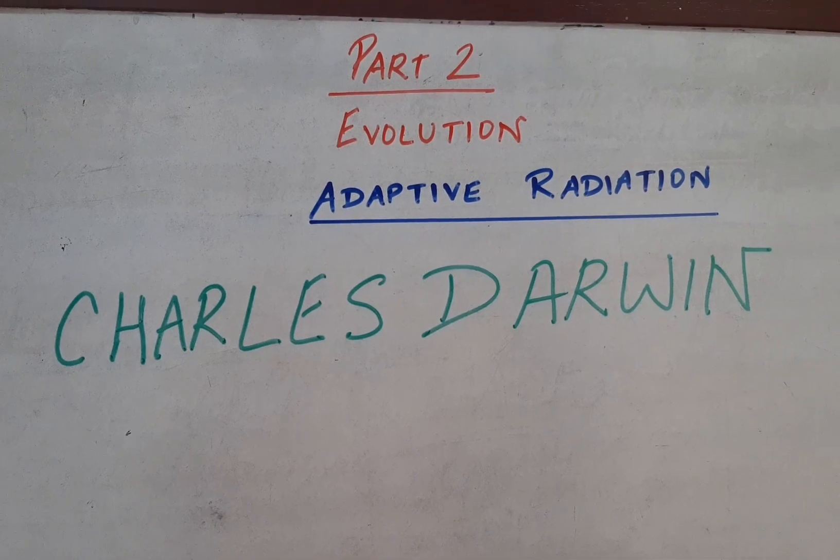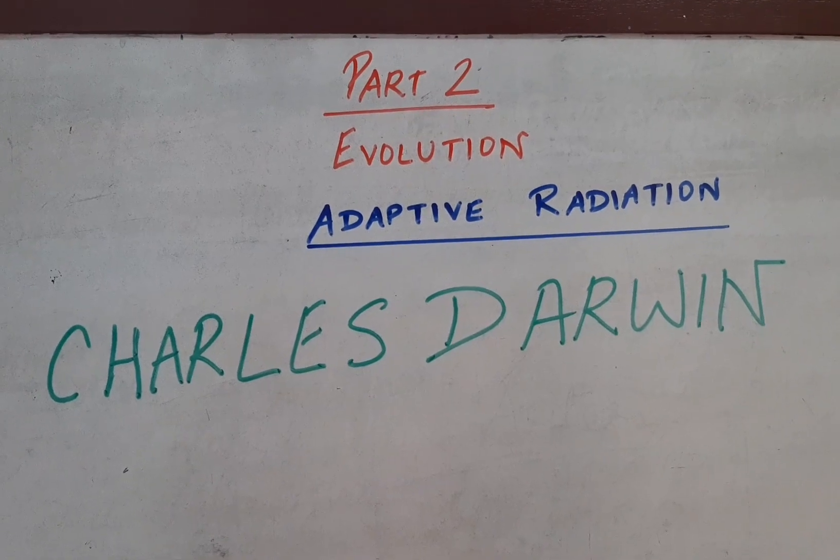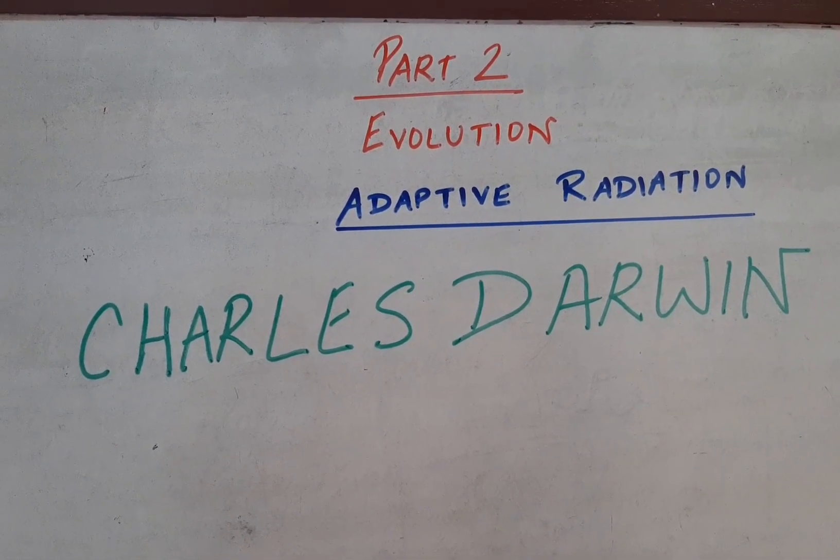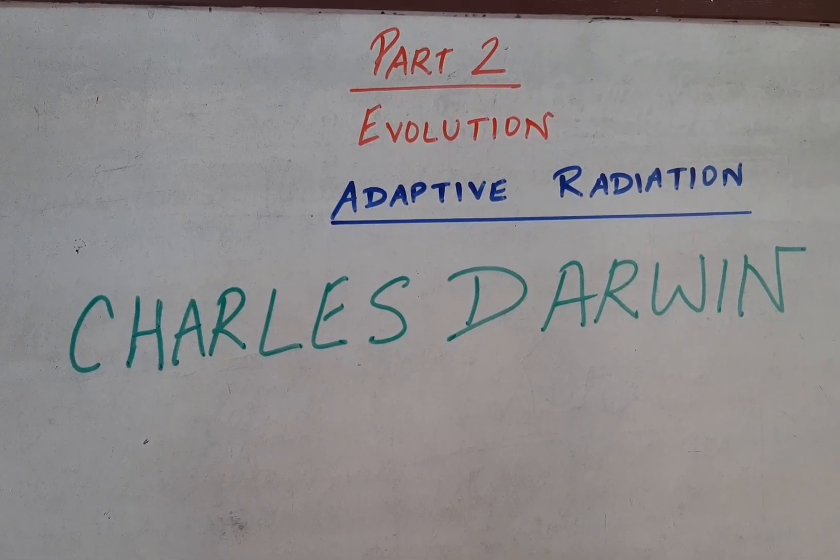My dear students of class 12, today I am going to film the video for the second part of the chapter Evolution. Here I am focusing on the topic adaptive radiation with a few examples. So do watch it and try to understand the topic. This is part 2 of the chapter Evolution.